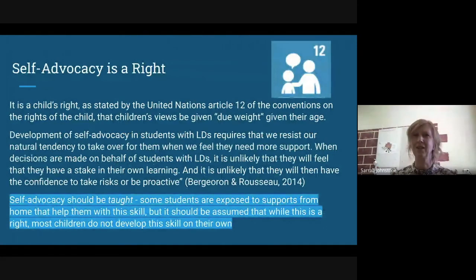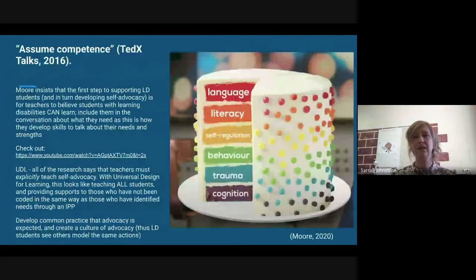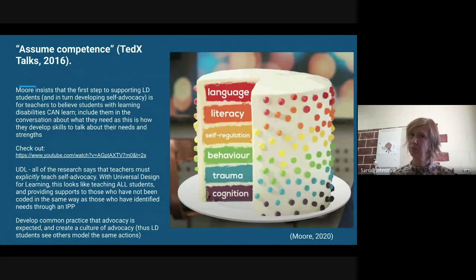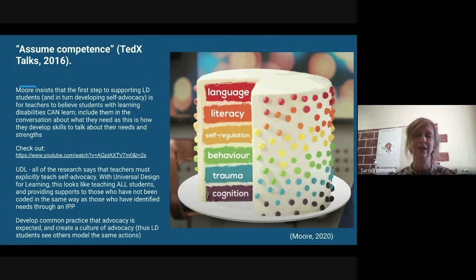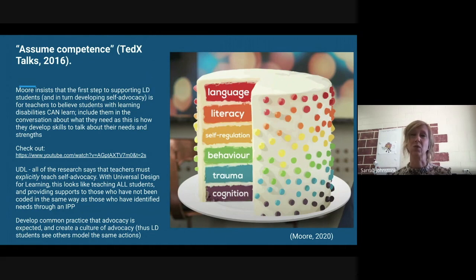Advocacy is a right. The United Nations Article 12, Conventions of the Rights of the Child — students must be able to advocate for themselves, but oftentimes they haven't been taught. And last but not least, assume competence. Students will have disabilities in many different areas: language, literacy, self-regulation, behavioral — some resulting from trauma, some cognitive. Recognizing that we need to be teaching all students, perhaps through a universal design for learning, but also specifically targeting and giving vocabulary to those students who need it most. Developing a common practice of advocacy is expected and needed in schools, but so too is making sure students with exceptionalities have the language to ask for what they need — and that must be taught.